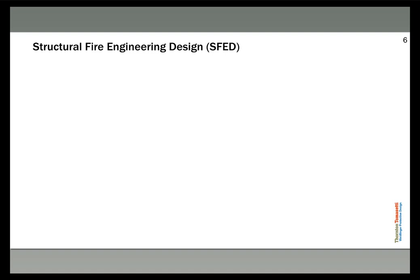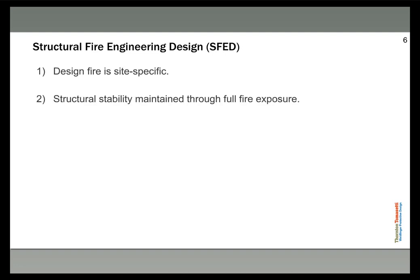Structural fire engineering design is very different. The design fire is now site-specific — we look at what's actually in our environment that will impact our structure. For example, for a train station overbuilt structure, the critical fire would likely come from a train and its fuel catching fire directly below your building. That's very different from the codified fire used in standard fire resistance design, and it will vary from building to building and site to site. This lets us precisely define the actual fire load on our structure.